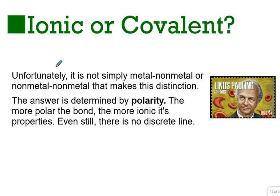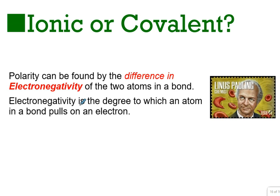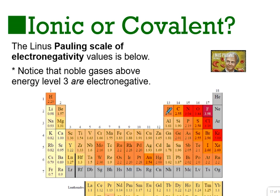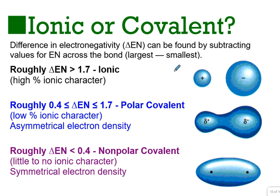Deciding whether something is ionic or covalent is not a perfectly clear line — it's a gray area. We determine whether a compound is ionic or covalent by its polarity, calculated by subtracting the electronegativity of each atom across a single bond. Electronegativity is the degree to which an atom pulls on an electron in a bond. Generally, when the electronegativity difference is greater than 1.7, we consider it ionic. Between 0.4 and 1.7, it's a polar covalent molecule. Less than 0.4 is nonpolar, with roughly equal sharing of electrons.